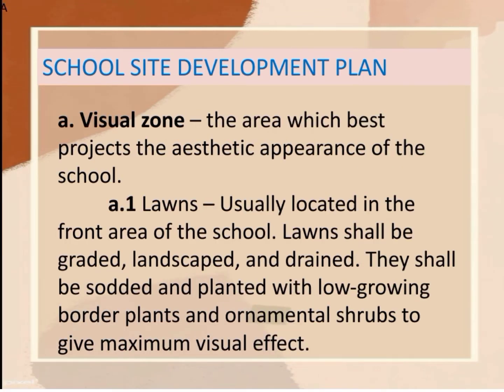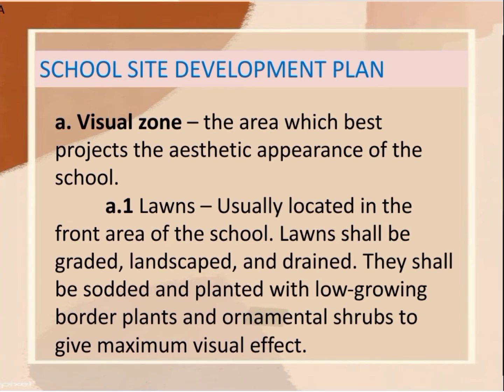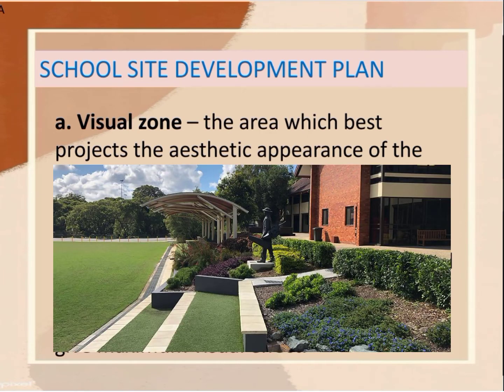A visual zone is the area which best projects the aesthetic appearance of the school. Under visual zones, we have lawns, usually located in the front area of the school. Lawns shall be landscaped and drained. They shall be planted with low-growing border plants and ornamental shrubs to give maximum visual effect.